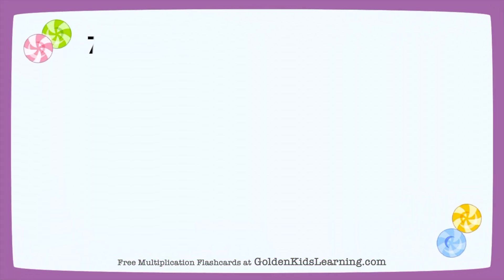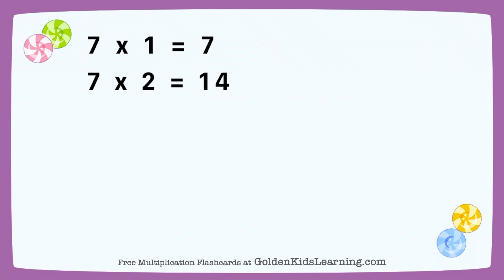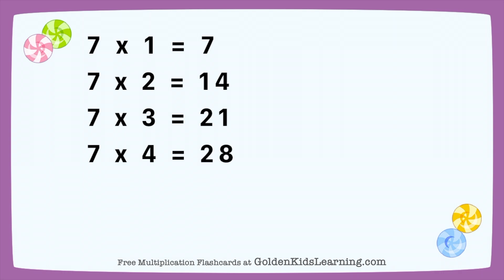7 times 1 equals 7. 7 times 2 equals 14. 7 times 3 equals 21. 7 times 4 equals 28. 7 times 5 equals 35.